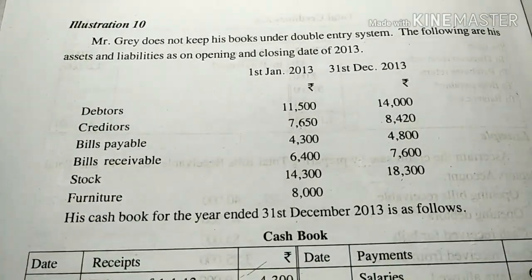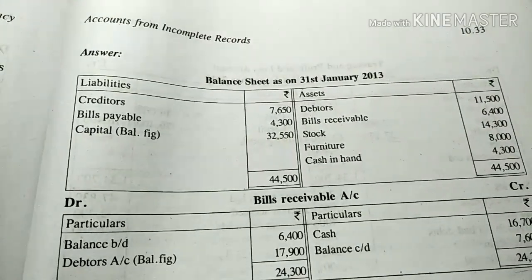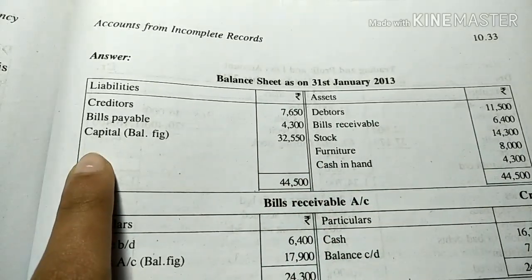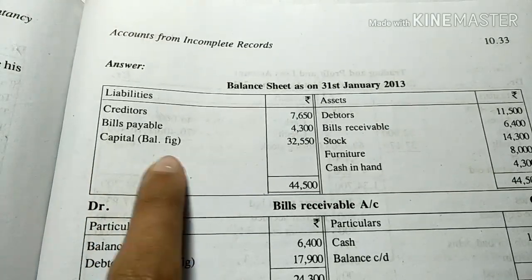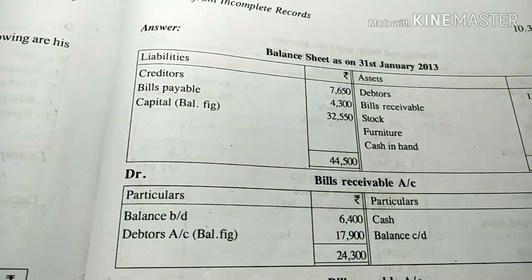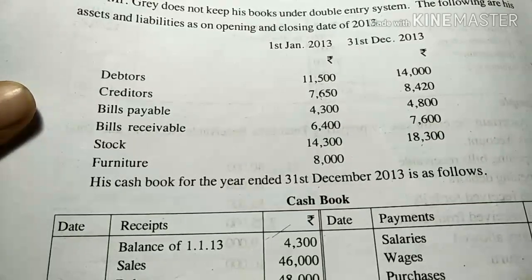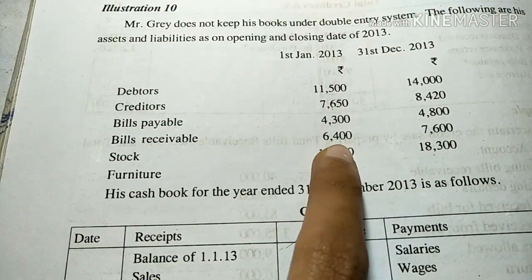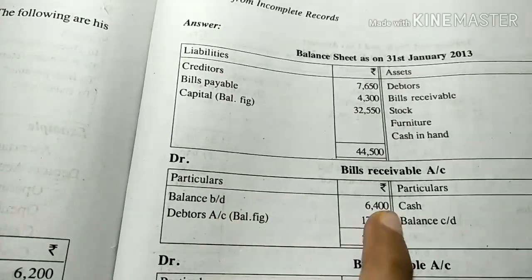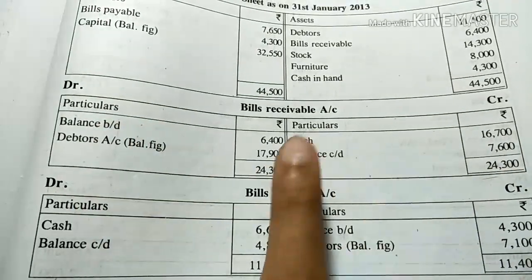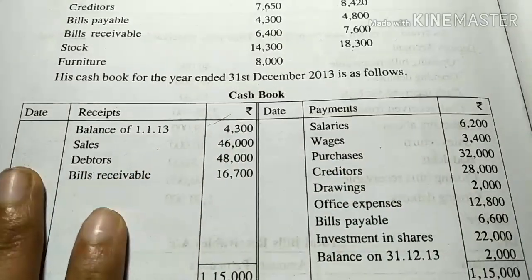This is the creditors and bills payable — these two are the opening balance. If you have any closing balance, we will get $200. If we have another closing balance, we will get $600. We will get the cash book and the bills receivable of $700.